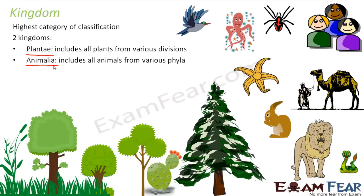These days, taxonomists have even started including subcategories, because only these seven categories are not enough to accommodate so many varieties of living organisms. For example, now they also have something called subspecies. Overall, after our discussion on taxonomic categories, we conclude that as we go higher in the taxonomic hierarchy, the similarities between the organisms keep decreasing.